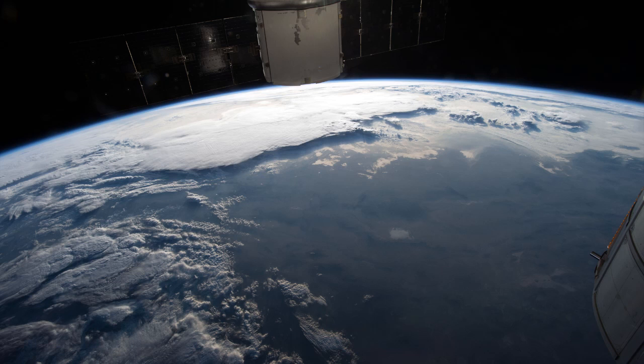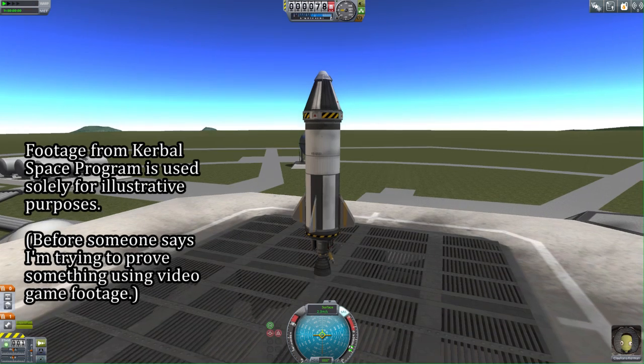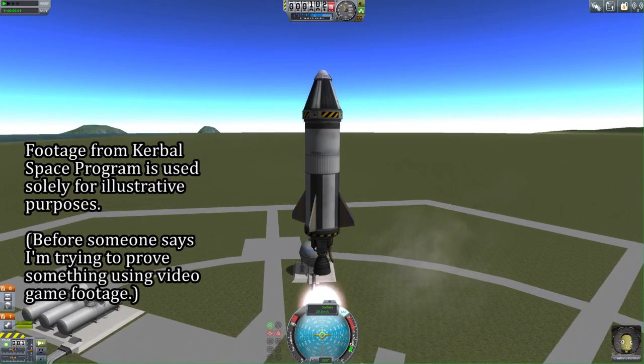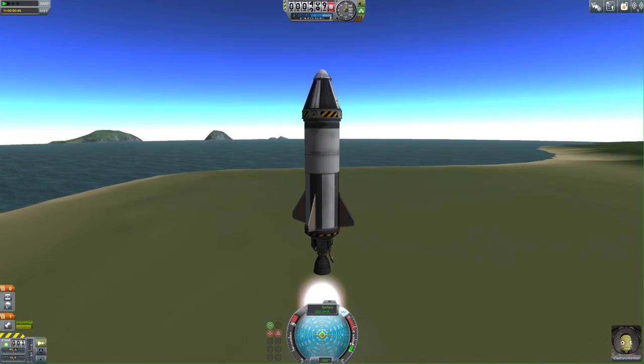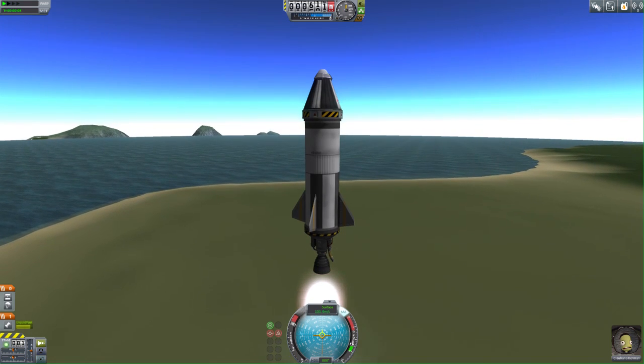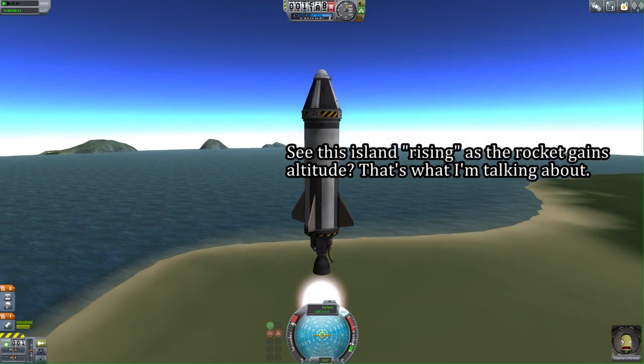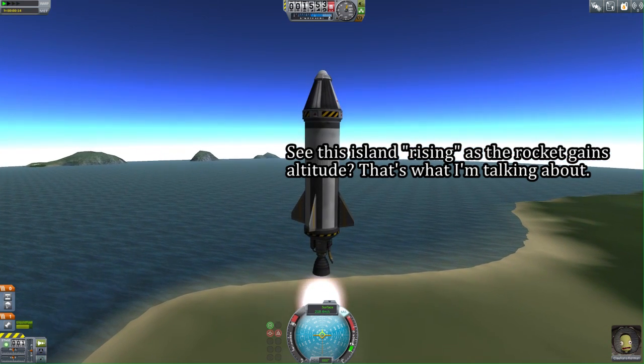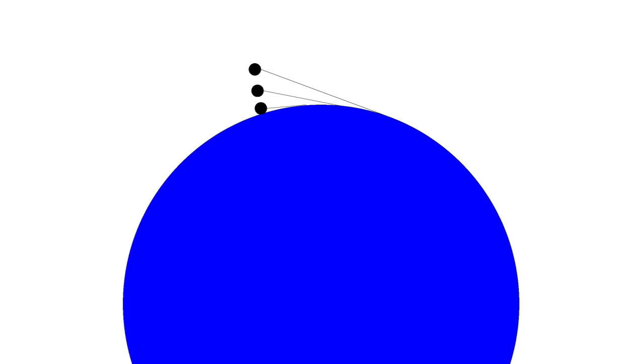Contrary to what Flat Earthers will claim, we've known that the Earth was round for a lot longer than we've been able to go high enough to actually take pictures that show the curvature of the Earth directly. The first observation that led the more well-educated people of the ancient world to understand that the Earth was at least curved, if not necessarily spherical, was probably that as you move to higher ground, things that were previously below the horizon become visible. The fact that this is the case in every direction indicates that the surface of the Earth curves down away from you in all directions.